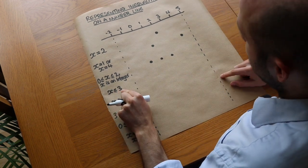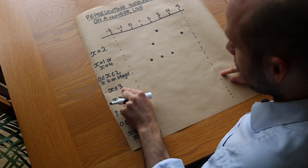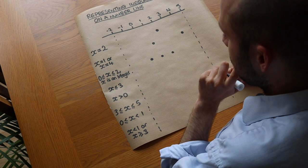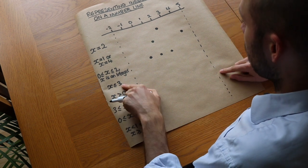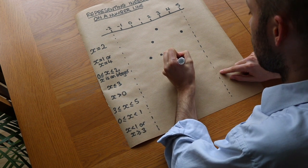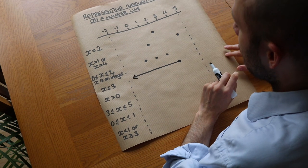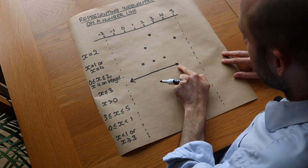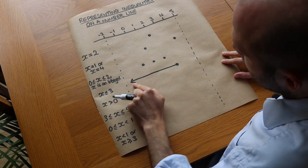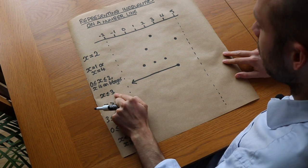Now we have x is less than or equal to 3, but it's not limited to integer values — it could be any decimal or whole number value. So x could be 3, 2, 2.5, minus a thousand, etc. The way we represent this is we start with a filled dot at 3, since x can actually equal 3, and then we draw a line extending leftwards with an arrow, indicating x can be any value less than or equal to 3, extending to negative infinity.